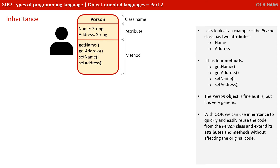Now this person object is fine, but it's very generic. With OOP, we can use inheritance to quickly and easily reuse the code from the person class and extend its attributes and methods without affecting the original code.